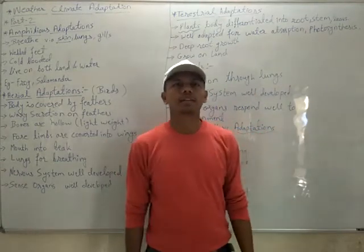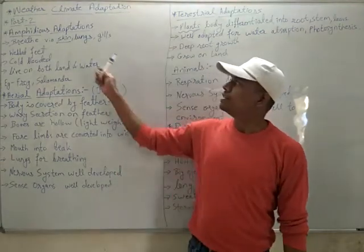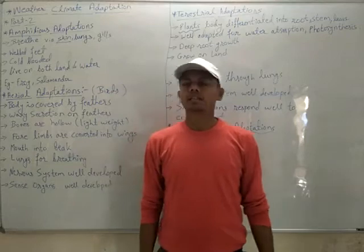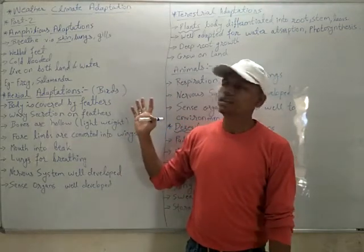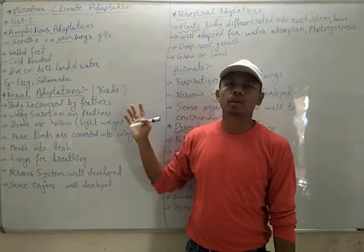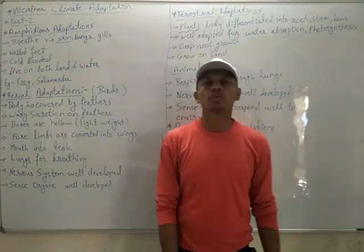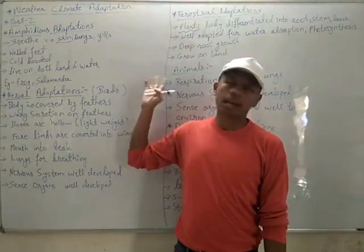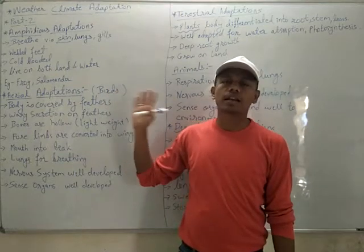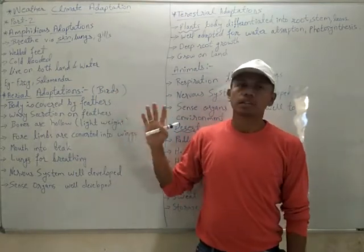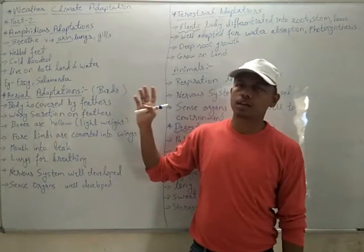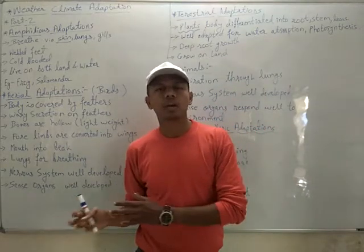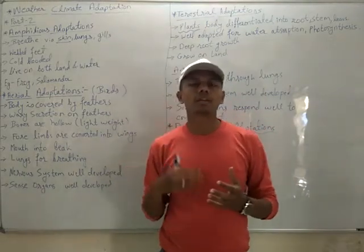Welcome students, this is the next session of Weather, Climate and Adaptation Part 2. In this part we will study the adaptations seen in different kinds of organisms. In Part 1 we studied what is weather, what is climate, and what is adaptation — how these three things are related. When weather changes, climate of the region changes, and if climate changes, there are impacts on living organisms.